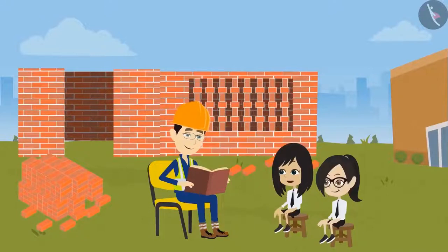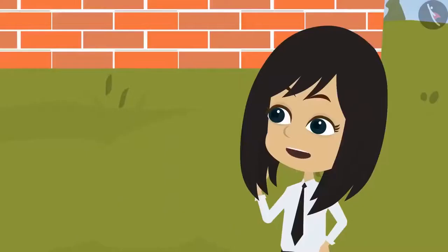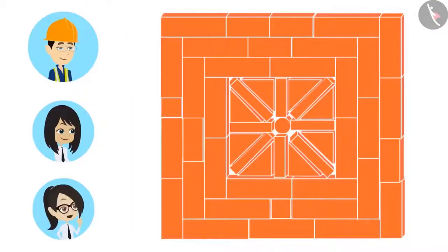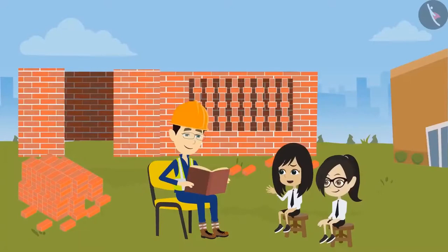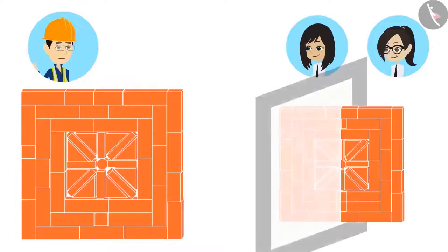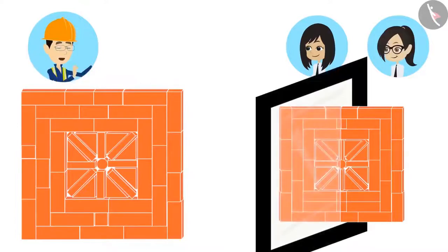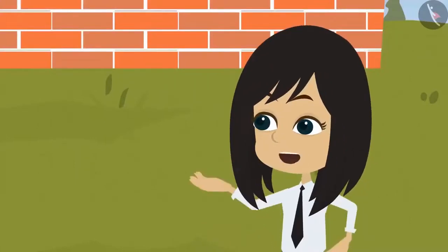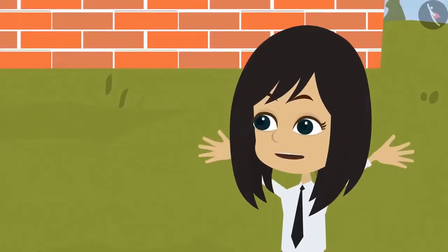Oh yes sir, this is really easy. Sir, please show more patterns. Look — wow, this pattern is very beautiful. Not only is it beautiful, there is something special about this design. Sir, what is special about it? This design is mirror half. What does mirror half mean? It means that if you cut this design into two halves and look at it in the mirror, you will see the whole design. It means the design present in one half is present in the other half too. Absolutely right, Neha.